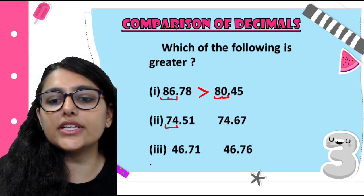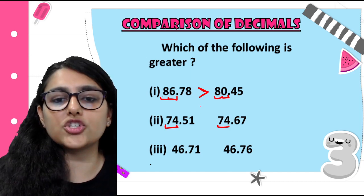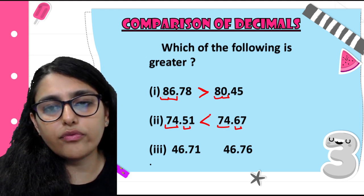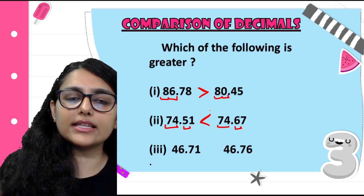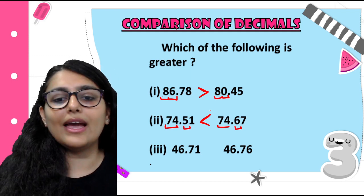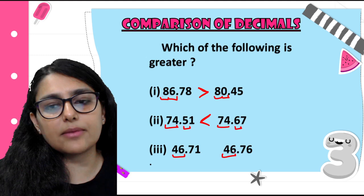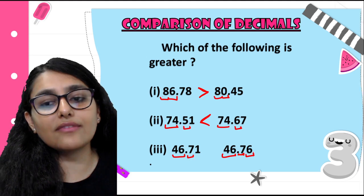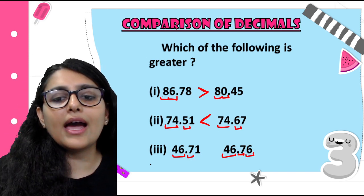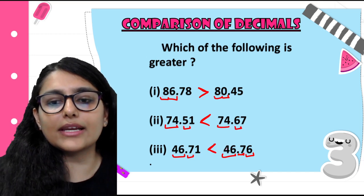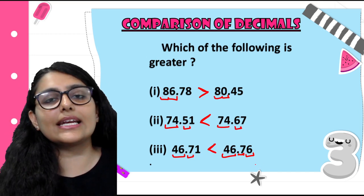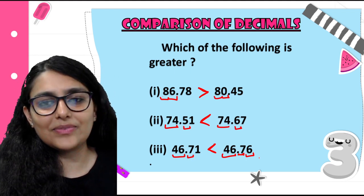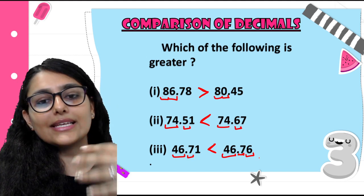Second example: both numbers are 74-something, so now we look at the position after the decimal. Here it's 5, here it's 6. So obviously the larger one wins — 74.67 is greater than 74.51. Third example: 46 and 46 are the same, so I have to go to the decimal side. 7 and 7 are the same again, so I look at the next number. 46.76 is obviously greater than 46.71. This is child's play — you people will be able to do it easily.